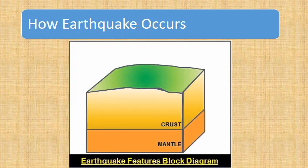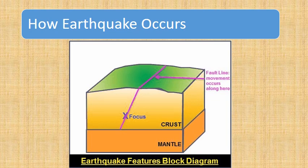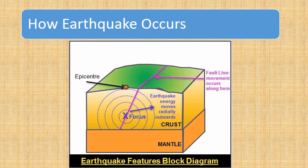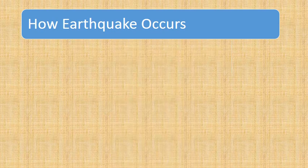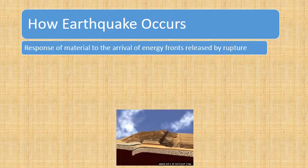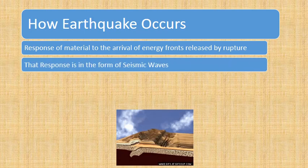How earthquakes occur: the main type of earth is based on crust, and at the fault line tectonic plate movement occurs, which causes a focus point for the earthquake. The earthquake starts here and moves outward radially, reaching the epicenter, from which earthquake waves are propagated. When this rupture occurs, the response is in the form of an energy front that creates seismic waves.